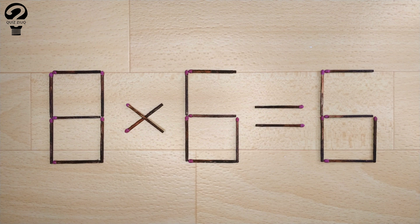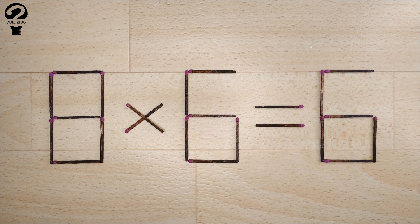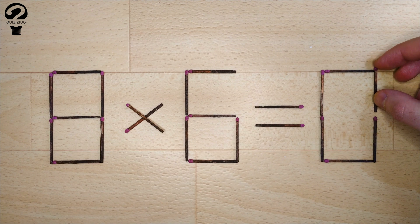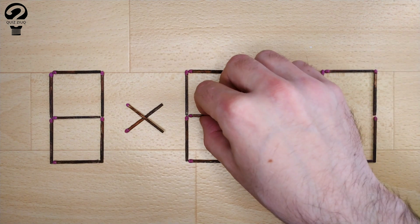How is this little puzzle solved? All we need to do is move two matchsticks. And now, when we check: 8 times 0 equals 0. Zero equals zero.